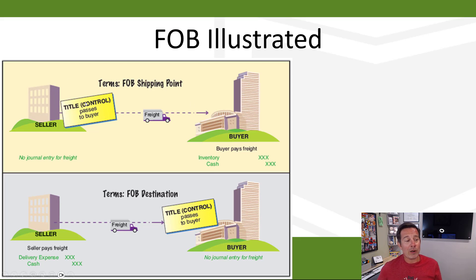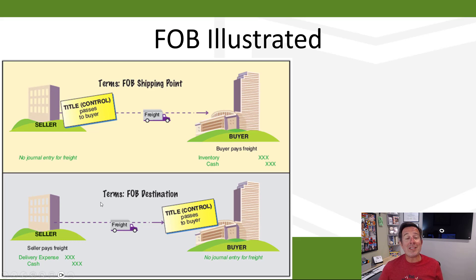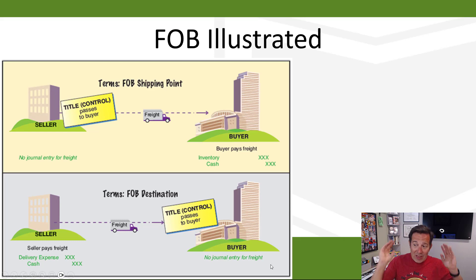FOB shipping point: title passes at the loading dock; at that point it is the buyer's responsibility to get it to them. Buyer's paying the freight — debit inventory, credit cash. In FOB destination, the title passes when it gets to the buyer; the seller's responsible for getting it there. That expense: debit delivery expense, credit cash. If you're the seller in FOB destination, the buyer doesn't have to do anything.